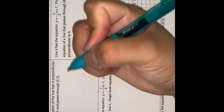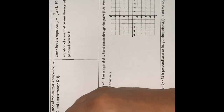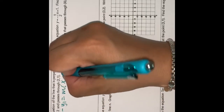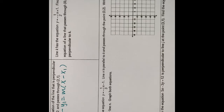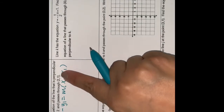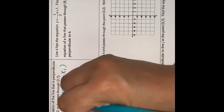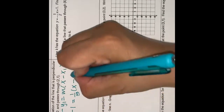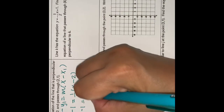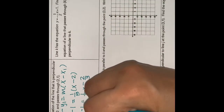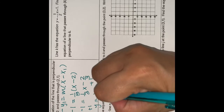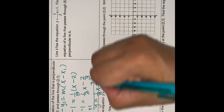Write an equation of the line that is perpendicular to y equals negative 3x plus 2 and passes through (2, 1). The original slope m is negative 3 over 1. For the perpendicular line, it's the opposite sign and reciprocal: positive 1 third. Using the point-slope formula y minus y1 equals m times x minus x1, substituting (2, 1): y minus 1 equals 1 third times (x minus 2). Distributing: y minus 1 equals 1 third x minus 2 thirds. Adding 1 to both sides: y equals 1 third x plus 1 third. That is your solution.